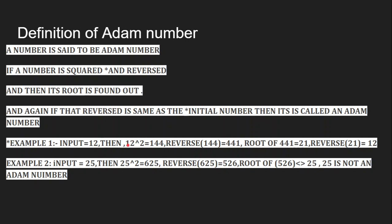In between, we have found the square and then the reverse and then the square root. Through all these processes, the result is the reverse of the original number — reverse of 21 is equal to 12. This type of number is called an Adam number.